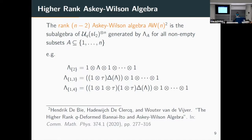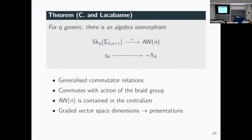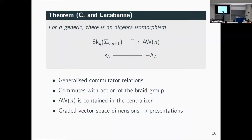So now we've defined both sides: the skein algebra, the higher rank Askey-Wilson algebra, and the generators — simple curves on one side, and these coproducts of the quantum Casimir on the other — and they match up. Any questions so far?